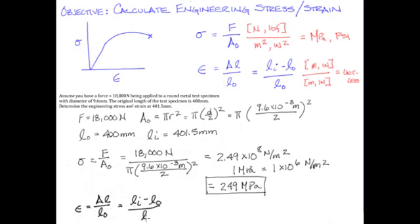In this case, we'll have 401.5 millimeters minus 400 millimeters over 400 millimeters, with a resulting value equaling 0.0037.